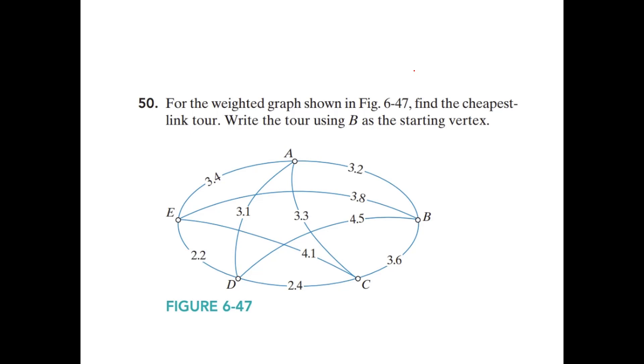Okay, so step one, find the cheapest link. So go ahead and do that. Pause the video, see what you think is the cheapest one, and then find that one. So by going through the weight of all the edges, the cheapest link is this link that connects vertices E and D.